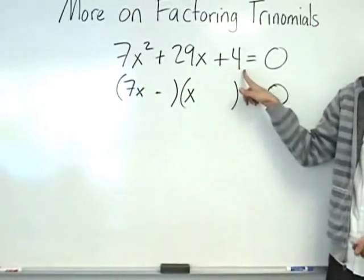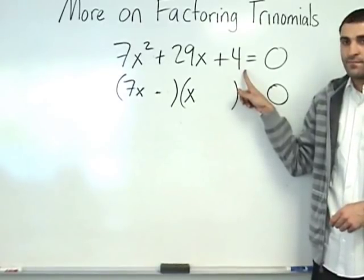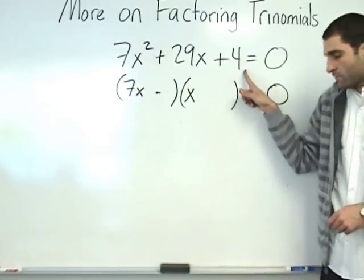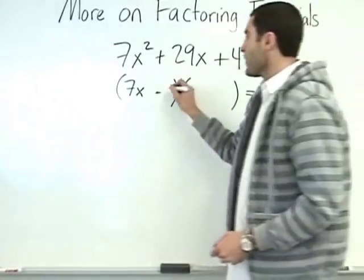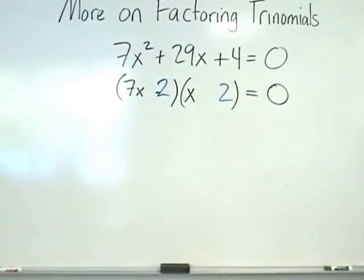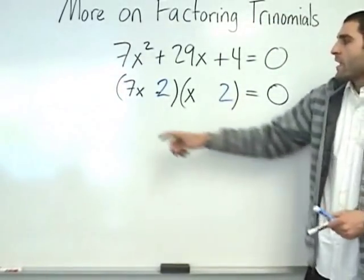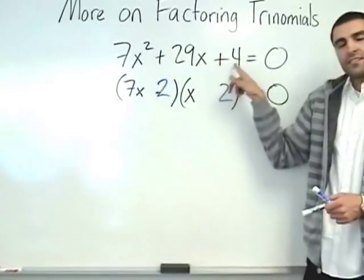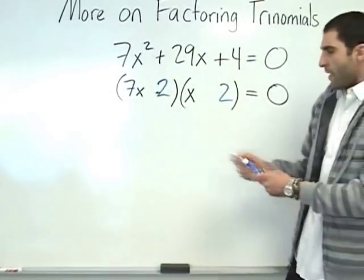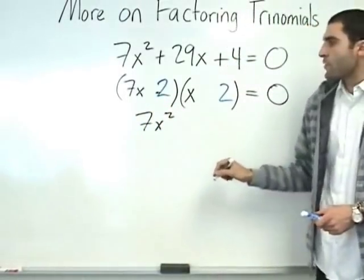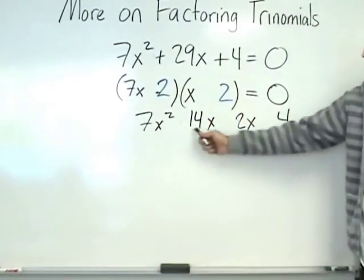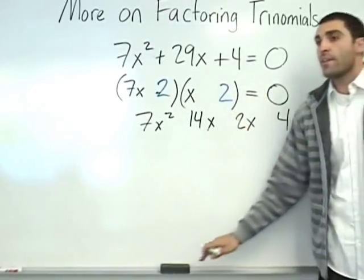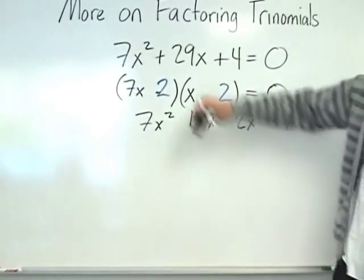So we started with that one. Now we're going to go to this one. What times what is 4? 2 times 2, or 4 and 1. Let's try 2 and 2. So let's foil this — forget about the signs for now, even though we can tell it will be both positive. 7x squared. 7x times 2 is 14x, and 2x. Can these somehow add to make 29? No. So it's not 2 and 2.